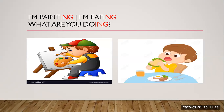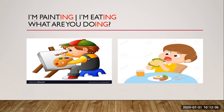So, vamos a aprender a decir lo que estamos haciendo en el momento. For example, tenemos el verbo paint, que significa pintar. Cuando le agregamos ING, estamos diciendo que la actividad se está realizando en el mismo momento. For example, painting — pintando. Para yo decir que estoy pintando, entonces digo: I'm painting.